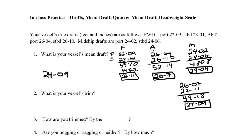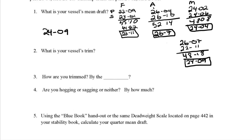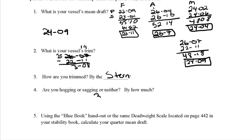The vessel's trim is the difference between the forward and aft drafts. So we do 26.07 minus 22.11. I borrow one foot (12 inches), making it 25'19" minus 22'11". That gives 3 feet 8 inches. The vessel is trimmed by the stern, since the stern is deeper.